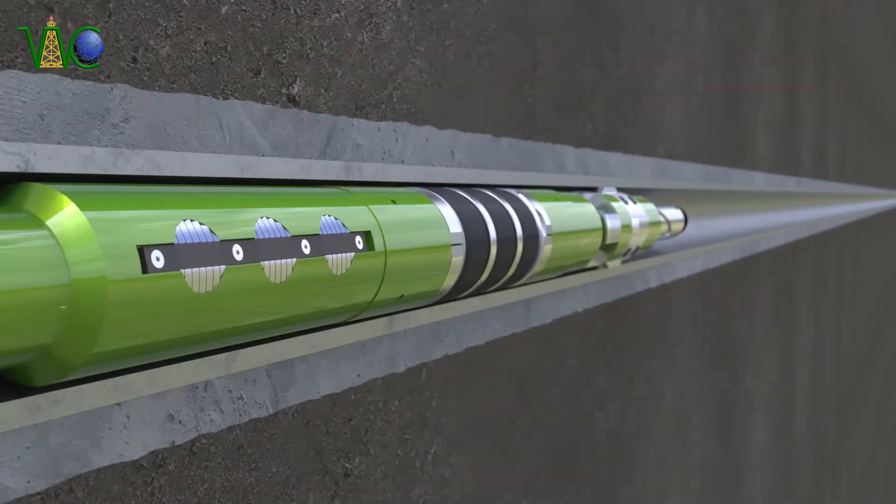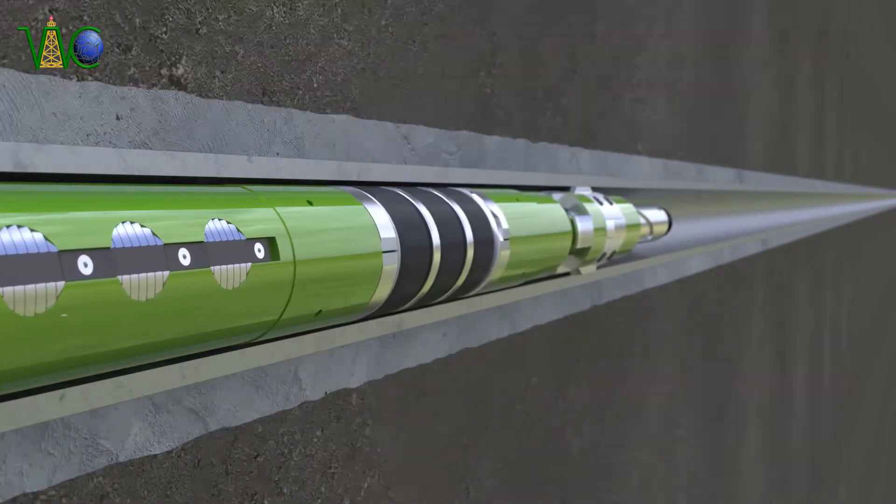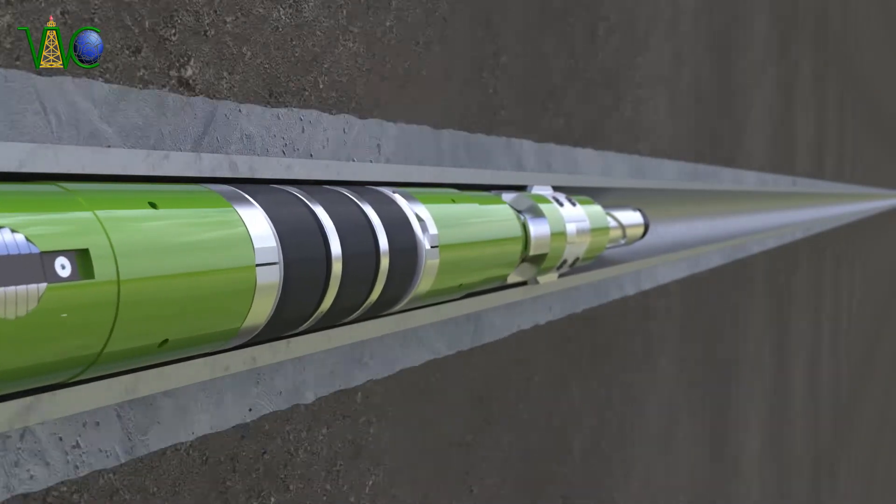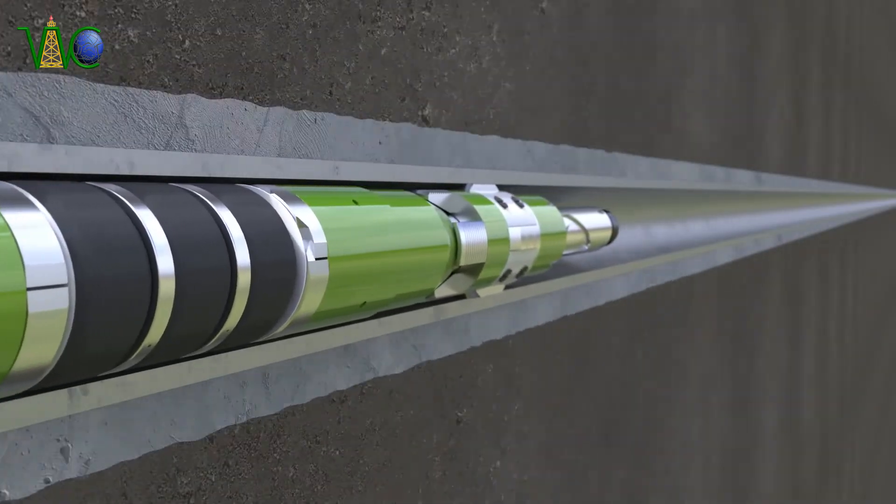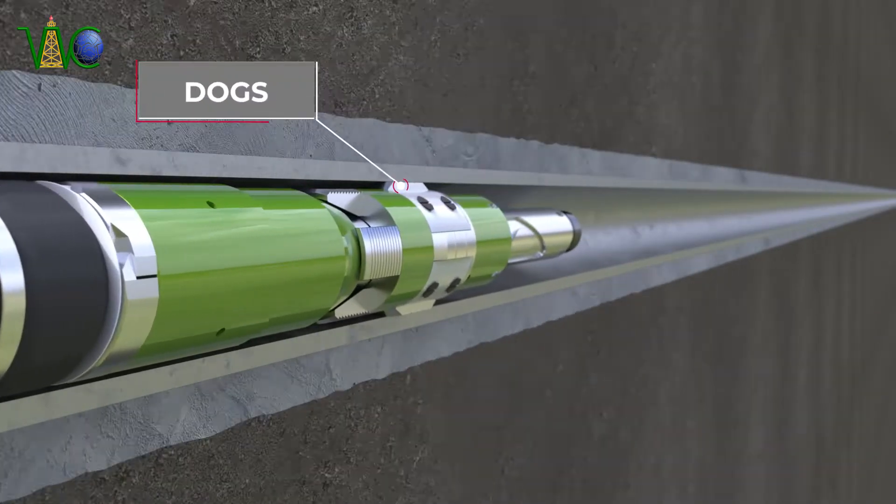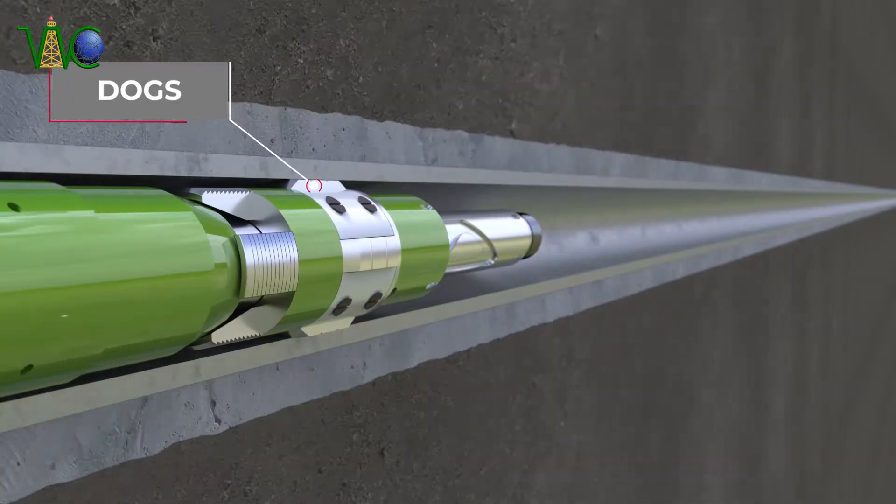The packer is lowered into the well on the tubing or drill pipe to the required depth. During hoisting operations, dogs are constantly pressed against the walls of production casing.